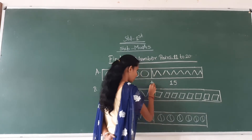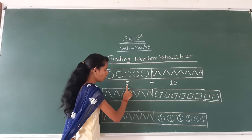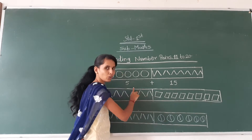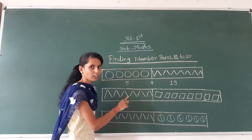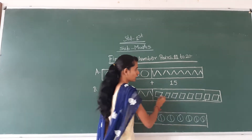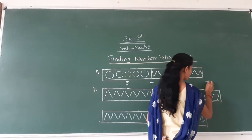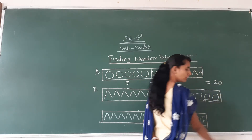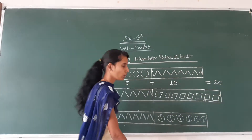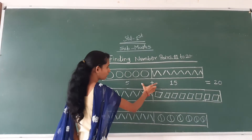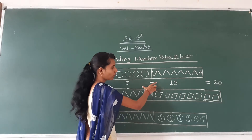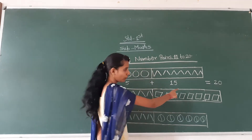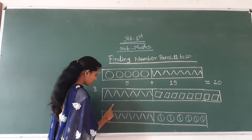See attention here: 5 plus 15 equals how many? Equal to 20. Finally, 15. We find different numbers there, 11 to 20.